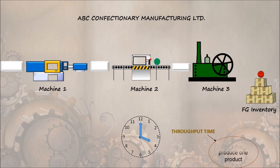Throughput time is the time taken to produce one finished goods. In this case, throughput time is 15 minutes for the first machine plus 15 minutes for the second machine plus 30 minutes for the third machine, which sums up to 60 minutes.